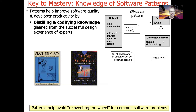Patterns also distill and codify knowledge gleaned from years and even decades of successful design experience from experts. For example, early uses of the Observer pattern go way back to the 1970s in the form of Smalltalk and its Model-View-Controller framework. And fast-forwarding about a decade, it also appears in something called ToolTalk — a PubSub middleware developed by Sun to do integration between their various tools over remote procedure calls. Patterns help us avoid reinventing the wheel for common software problems, so we don't have to start from scratch or learn through the painful trial and error that the original developers had to go through.